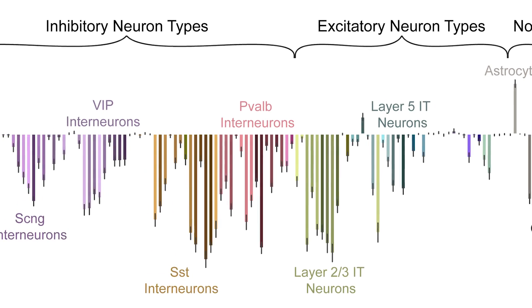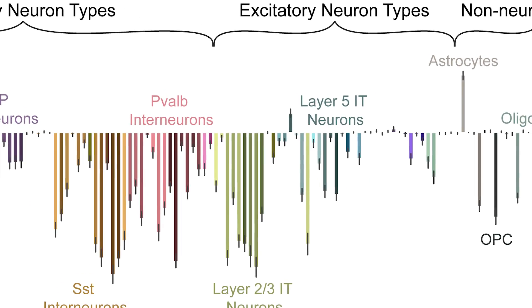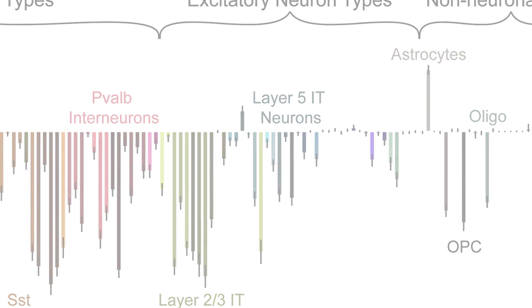That means that we can not only identify this is a cell type that we care about, but we also have a way in. We have a molecular handle on getting access to those cells and maybe understanding a bit more about how they function.